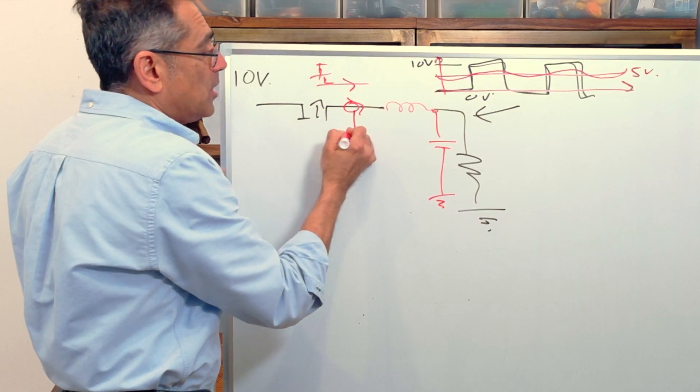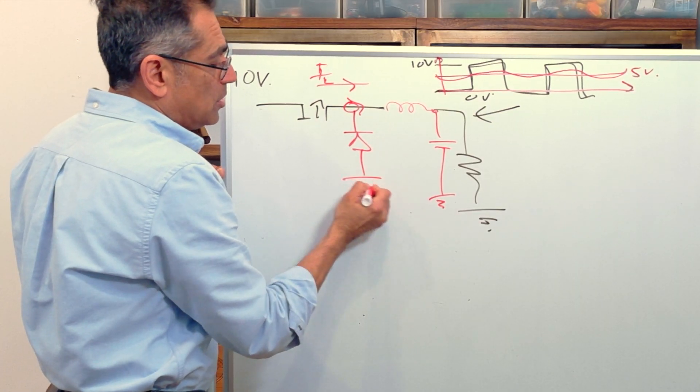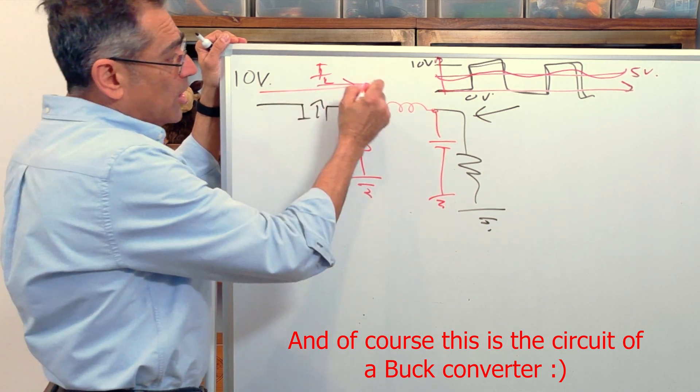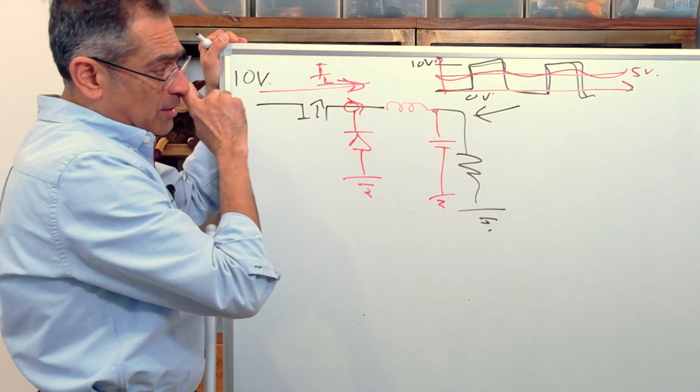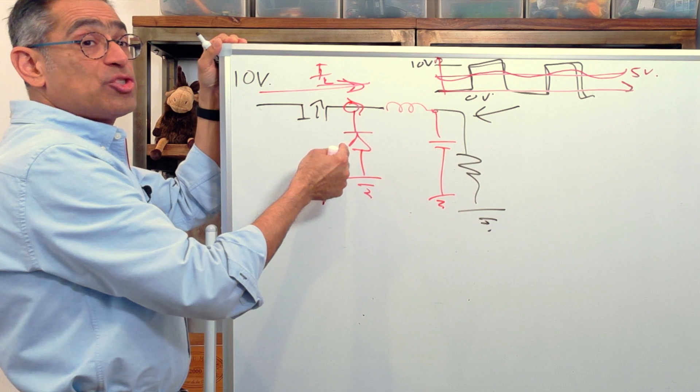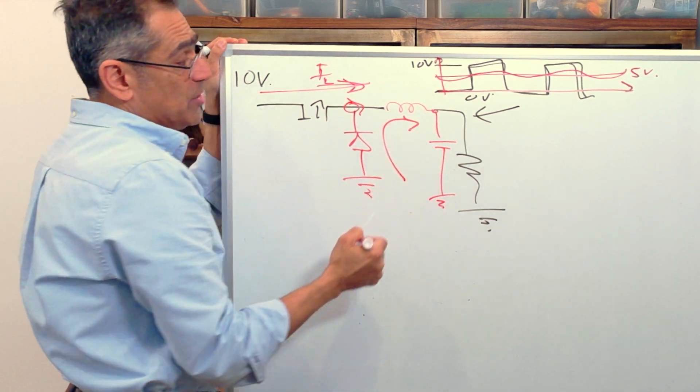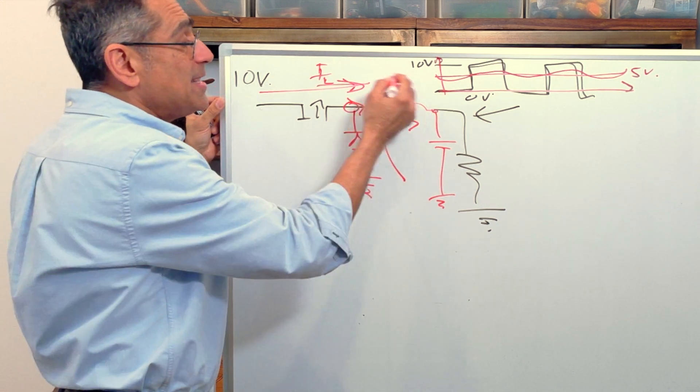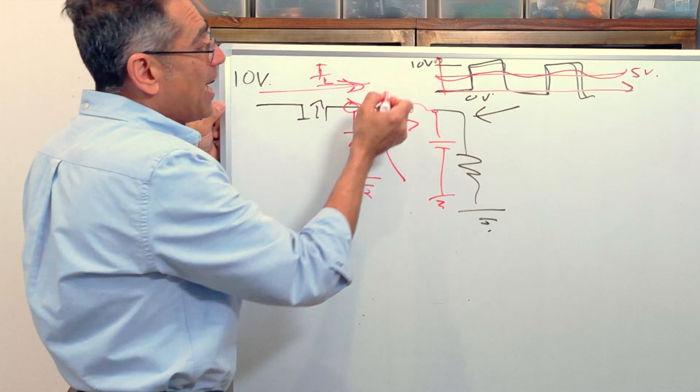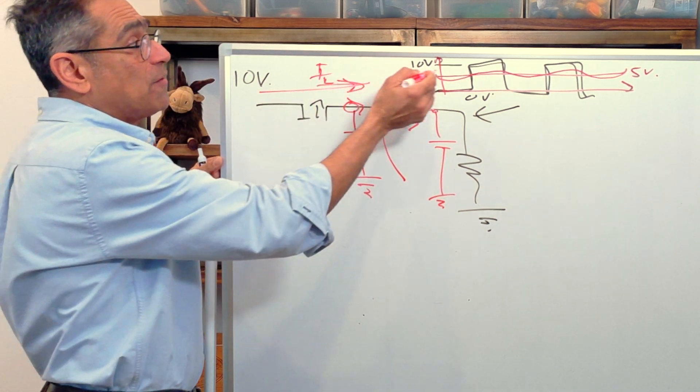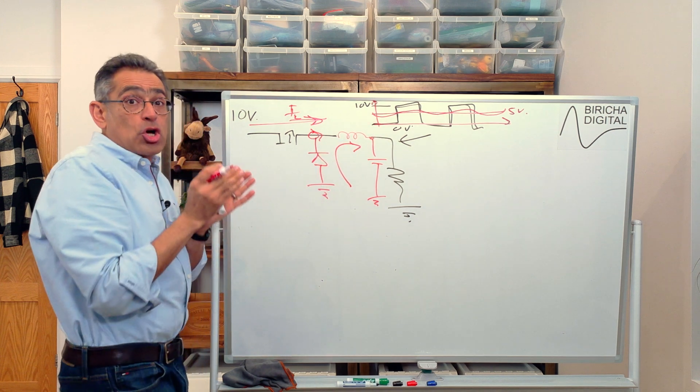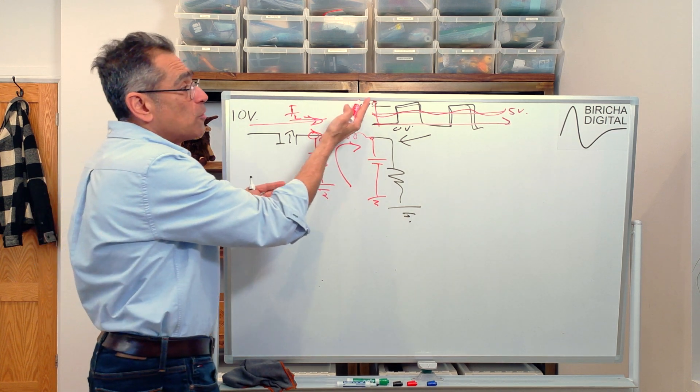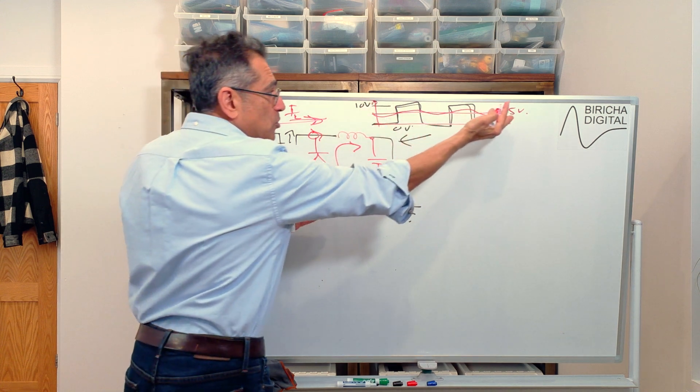And we do that by placing a diode right there. So when you turn the switch on, the current goes this way through the inductor. When you turn the switch off, the current will go here through the inductor. So the current through the inductor is flowing all the time. This is acting like a filter. And therefore if you had a duty of 50%, so you're turning it on for 50% of the time and off for 50% of the time, your voltage will fall from 10 volts to 5 volts.